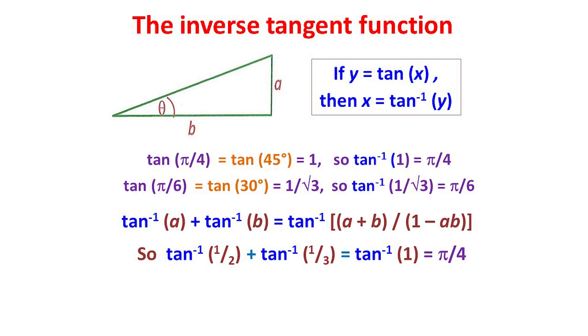If y equals tan x, then we write x equals tan⁻¹y. For example, the tangent of π/4, that's tan 45 degrees, is 1. So tan⁻¹ of 1 is π/4. And the tangent of π/6, that's tan of 30 degrees, is 1 over the square root of 3. So tan⁻¹, 1 over root 3 is π/6. And we can also combine different values of tan⁻¹ by using the addition formula shown here.